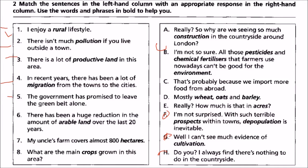Five: the government has promised to leave the green belt alone. We match it with A — really? So why are we seeing so much construction in the countryside around London?